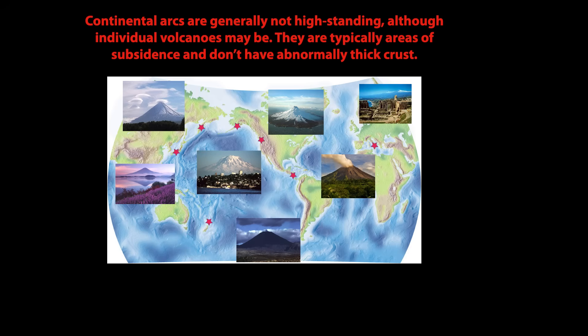Furthermore, the stratigraphy within pendants and wall rocks of Cordilleran batholiths provides no evidence for thick crust, as the volcanic rocks are intercalated with shallow marine sedimentary rocks, and therefore sat at sea level or below during volcanism. Thus, where arcs are concerned, the high-standing Andes are the outlier, simply atypical of modern and ancient arcs. Arcs get thick crust beneath them when they collide and override continents.